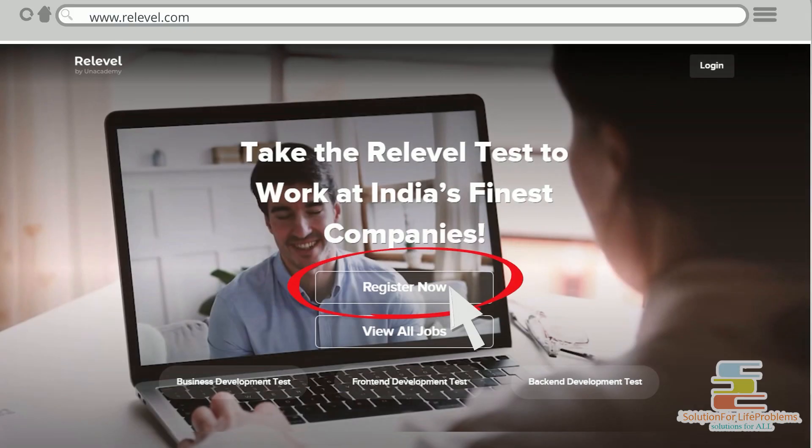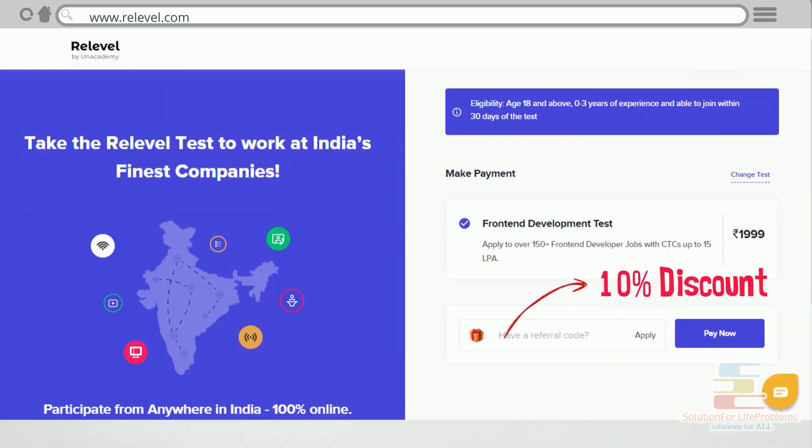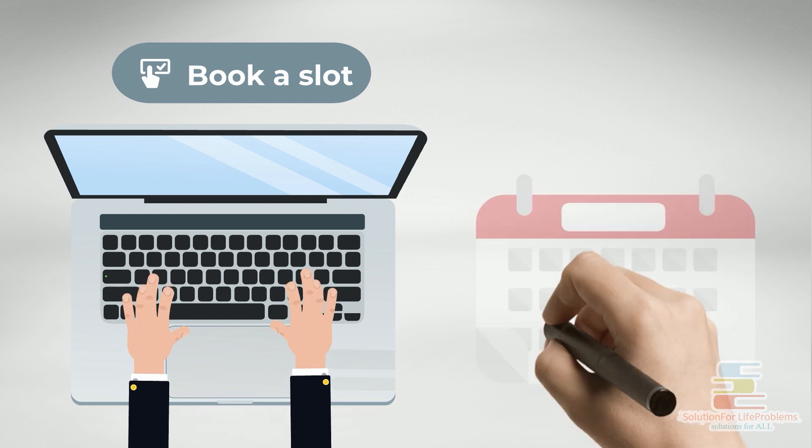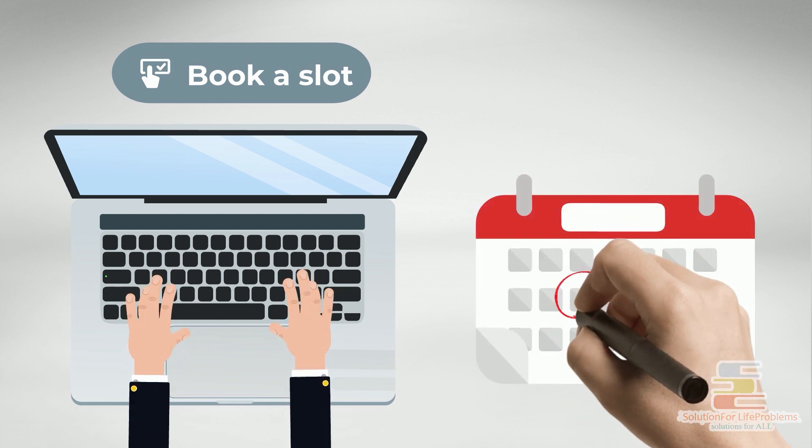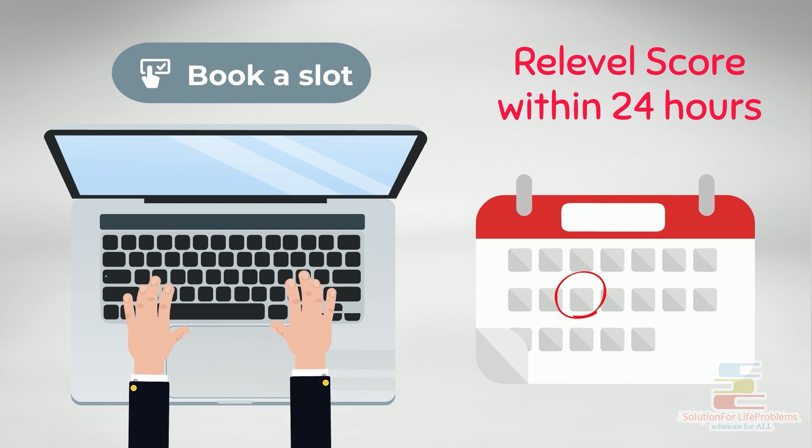How do you apply? Visit www.relevel.com. Register for the test of your choice using our coupon code for 10% discount. Book a slot and choose the day you wish to take the exam. You will get your ReLevel score within 24 hours of completing the test.